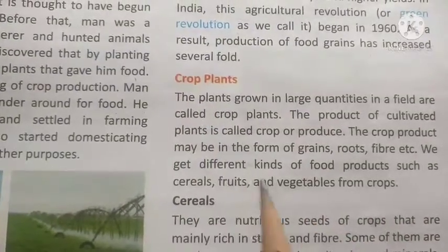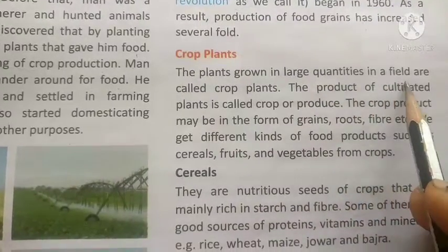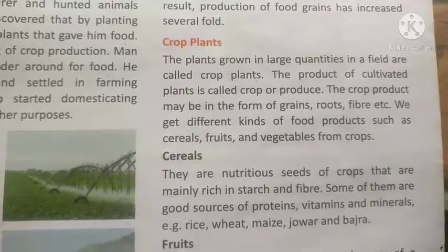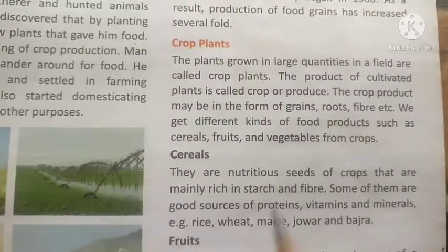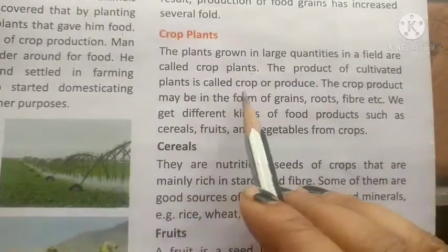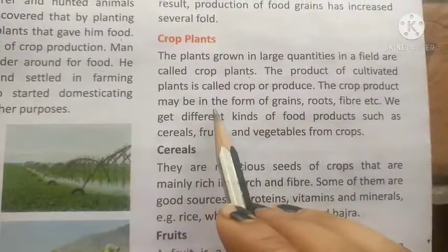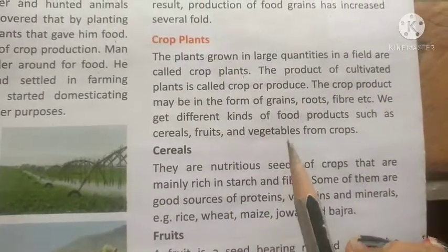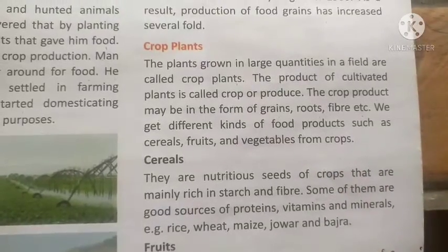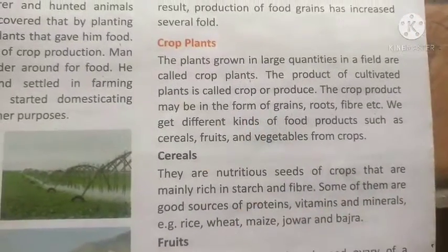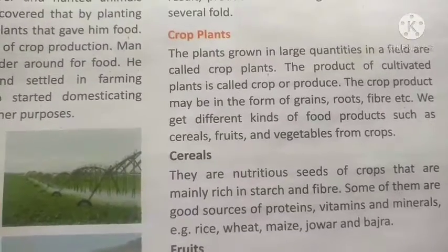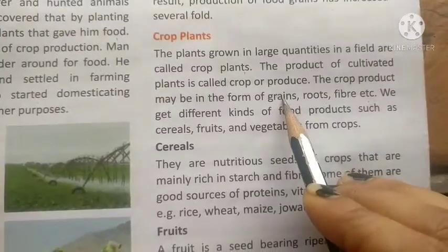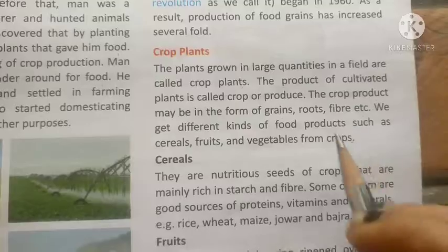There is a variety of crop plants. The plants grown in large quantity in the field are called crop plants. The product of cultivated plants is called crop or produce. The crop product may be in the form of grain, roots, fiber, etc.